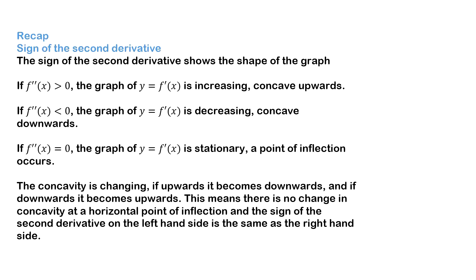To recap: we're mainly dealing with the second derivative. If the second derivative is greater than zero, the curve is concave upwards. If it's less than zero, the curve is concave downwards. You can use the second derivative equal to zero to find points of inflection. And remember, if the concavity doesn't change — going from positive to positive or negative to negative on either side — that is what we call a horizontal point of inflection.